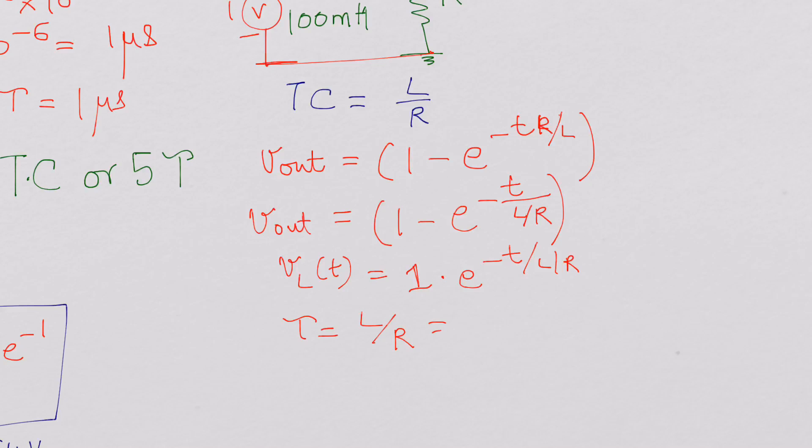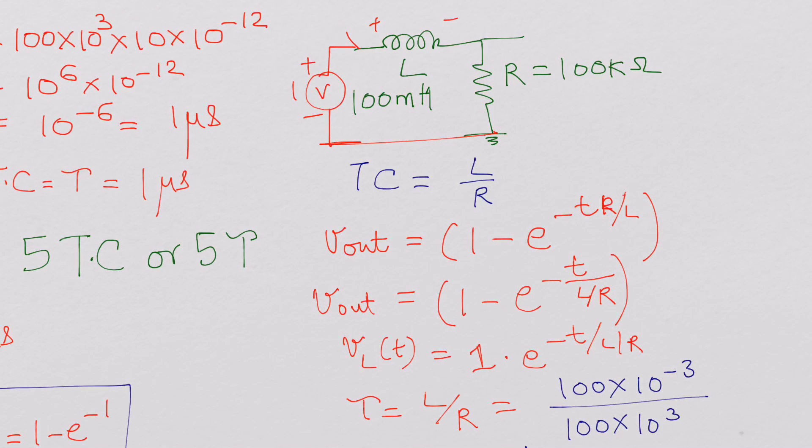So now if you calculate the tau here for this example, we said it is 100 millihenry over 100 kilo ohms, that is again 1 microsecond. So this is the time constant for the RL circuit.